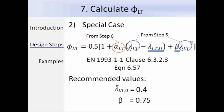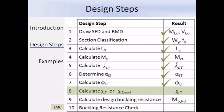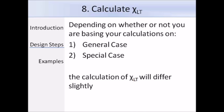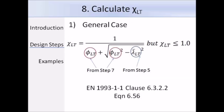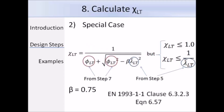The next step is to calculate chi LT for the general case, or chi LT for the special case. You must stick to the case you have been using since determining alpha LT, as the equations for chi LT and chi LT modified differ. For the general case, expression 6.56 gives chi LT using phi LT and lambda bar LT already worked out. Note that chi LT must be less than or equal to 1, since it is a reduction factor. For the special case, expression 6.57 includes the additional term beta, which the UK National Annex sets to 0.75.